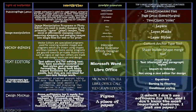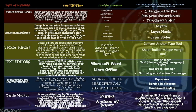We don't need these vertical lines because we already know this has columns — we can see them. There's a lot of colors on here too. I don't think we need all these colors. We can already see that there are rows, and there's nothing particularly red about publishing software or purple about design mockup software. Let's limit it to one color. I don't have a style sheet for this slideshow because I was only going to do one slide, so I guess the best thing to do is copy somebody else's style. We'll just make it blue.